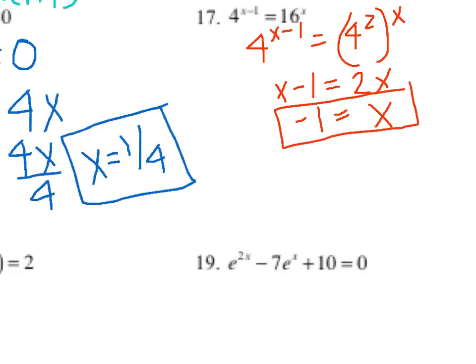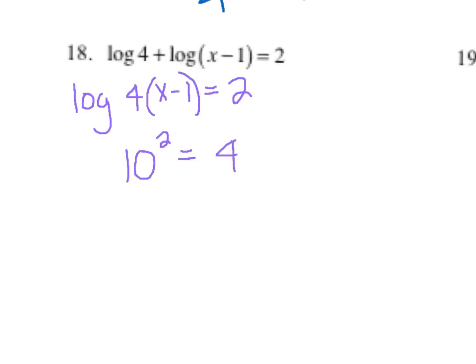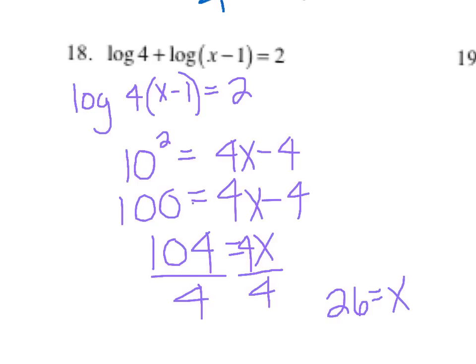Number 18 looks like number 16 — I can condense by using multiplication. I change this into exponential form. Since there's no base shown, I know the base is 10. So 10 squared equals 4x minus 4. That gives 100 equals 4x minus 4, add 4 to both sides: 104 equals 4x, divide by 4, and I get x equals 26. Plug that back in, it makes a true statement, so that is our answer.